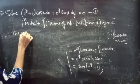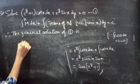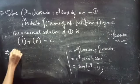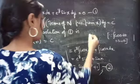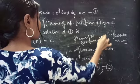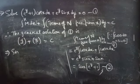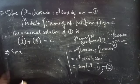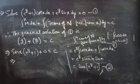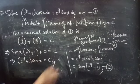Therefore, the general solution of equation 1 is: result of the first integral plus result of the second integral equals to c. We have sin x into e power y plus 1 from the first integral, and 0 from the second. So the solution is sin x into e power y plus 1 plus 0 equals to c, which can also be written as e power y plus 1 into sin x equals to c. This is the required general solution.